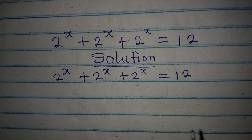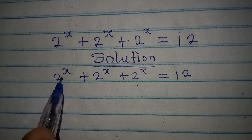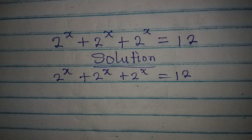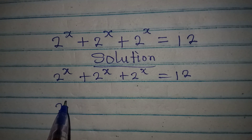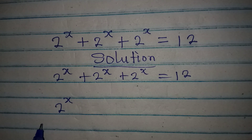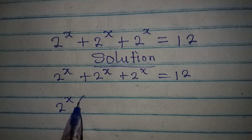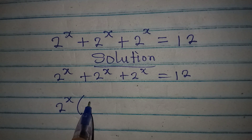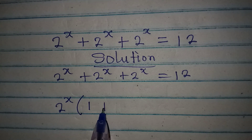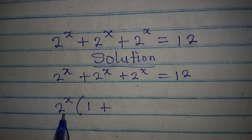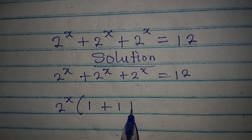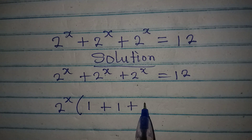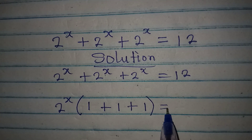We have 2 to the power of x in three places. Let's factor it out — 2 to the power of x is a common factor. 2^x divided by 2^x is 1, plus 2^x divided by 2^x is 1, then plus 1 again. Close the bracket.